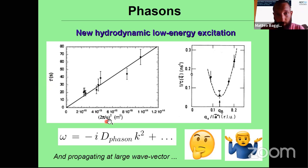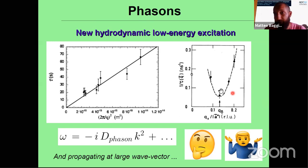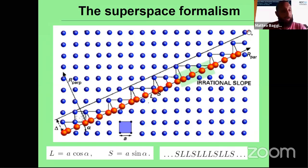Here you can see some experimental proof: these plots show the relaxation time as a function of q², and the slope gives the diffusion constant. The data points lie well on a line, confirming the dispersion relation of this mode is diffusive. At higher momenta the mode starts propagating. The question is: how do we explain this, and is it related to what we see in holographic models?